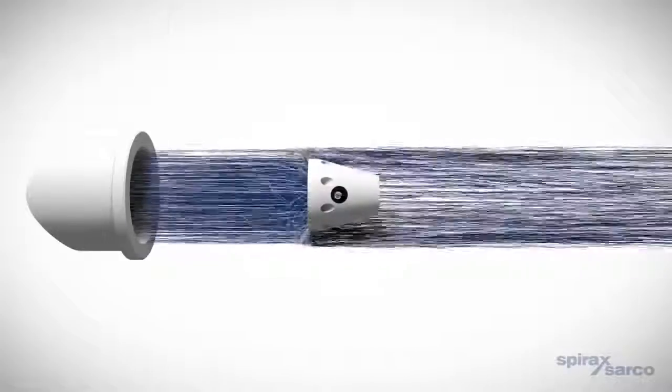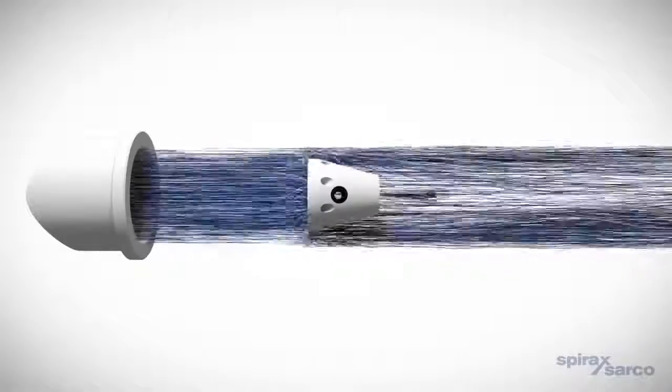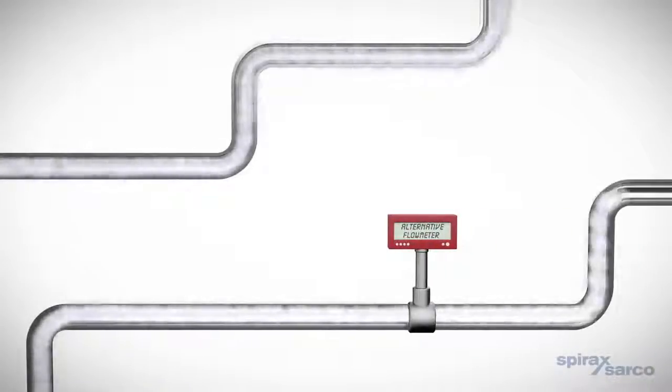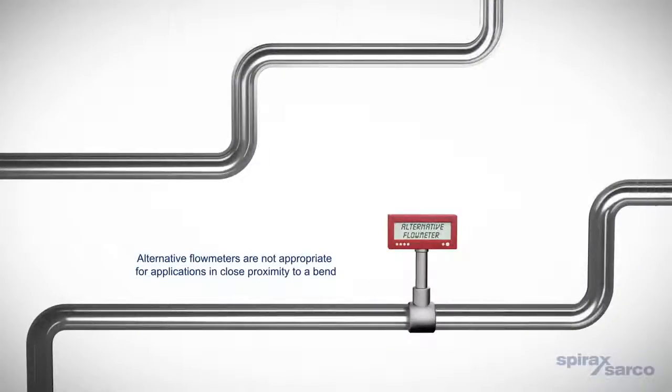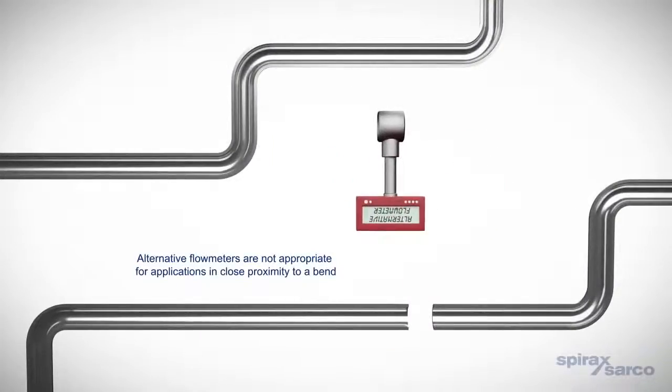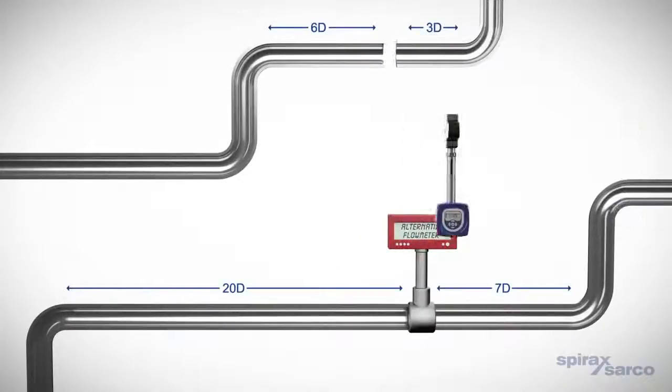The even flow profile allows for easy installation into previously unsuitable pipe work and confined spaces without compromising performance. Alternative flow meters are not appropriate for applications in close proximity to a bend installed within a single point of pipe entry, giving one of the smallest installation requirements on the market.